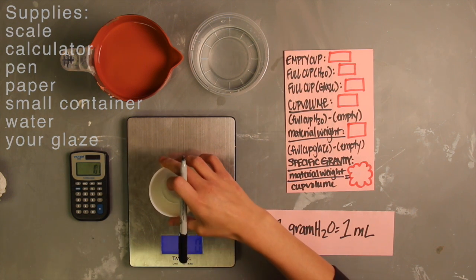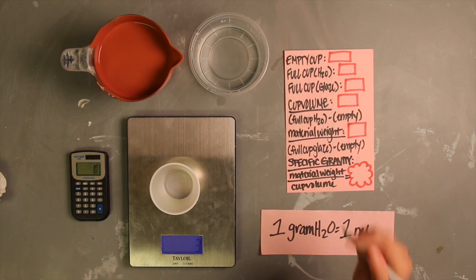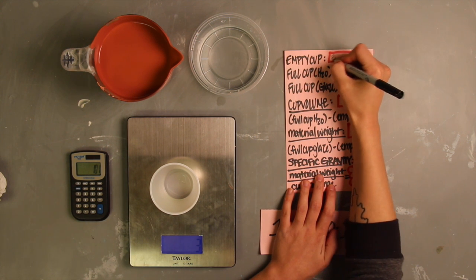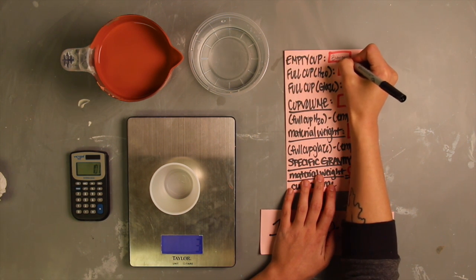Bring your scale to zero and measure the weight of your empty container. You'll need to subtract this from both the weight of your water and the weight of your glaze when it's time. Mine is 3 grams.